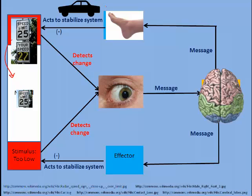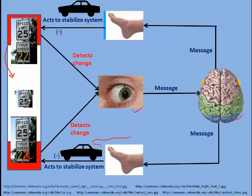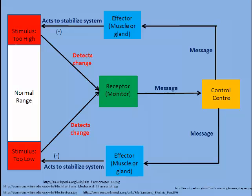But suppose that we are moving along and we slow down to the point where we're actually below the speed limit. The receptor would again detect the change and send a message to the control center, and this time the control center would send a different sort of message — still to the foot — to press down a little bit more on the accelerator so that the car will speed up and get back into that normal range. So from this we can see that there's constant monitoring of the system and constant adjustments to stay within that normal range.